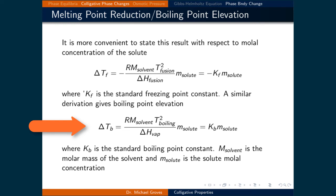A similar derivation can be done for the boiling point elevation. It leads to a similar expression: the change in boiling point equals R times the molar mass of the solvent times the boiling temperature squared times the molal concentration of the solute, divided by the enthalpy of vaporization. The constants in this expression can also be bundled together in a constant called k_b, the standard boiling point constant.